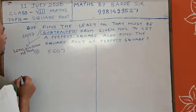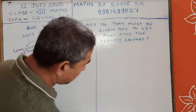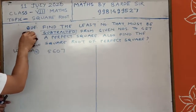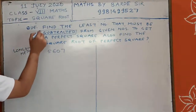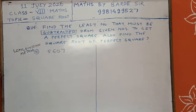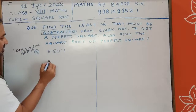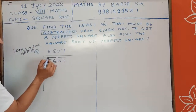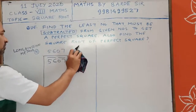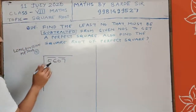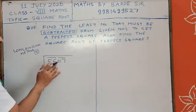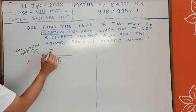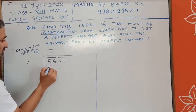Our question is: find the least number that must be subtracted from the given number to make it a perfect square. For this we use the long division method. There are 5607 — make pairs. Now what is the number whose square is just less than 56? We see 7 squared is 49, which is less than 56.